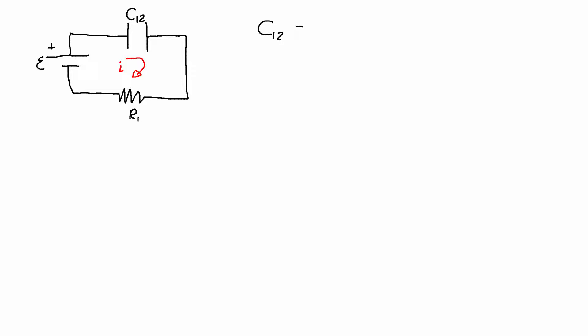We have C12 is equal to the inverse of C1 plus the inverse of C2 and then take that as the inverse. And after I substitute in I get 1.2 microfarads for the combined equivalent capacitance of C1 and C2 in series.